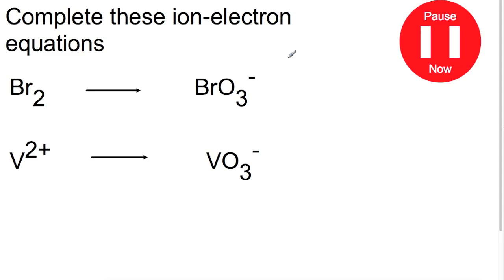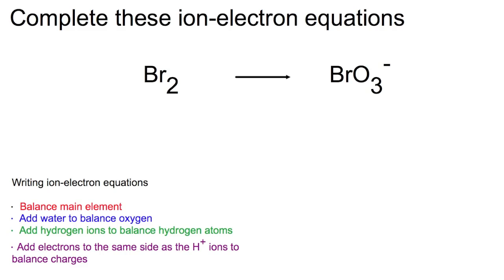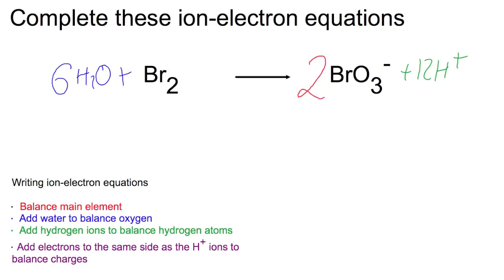Here are two equations for you to try — pause the video now. First example: step one — balance the main element. There are 2 bromines on the left but only one on the right, so put a 2 on the right. This changes the oxygen count to 6, so add 6 water molecules. To balance the hydrogens introduced, add 12H⁺ on the right. Checking charges: the left has 0, and the right has −2 plus 12 equals 10. We need to add 10 electrons to the right to bring it down to 0.